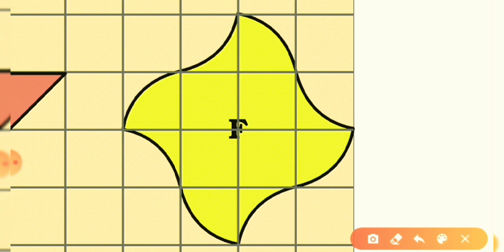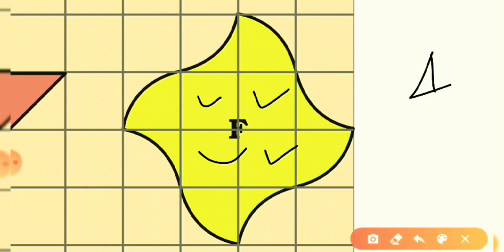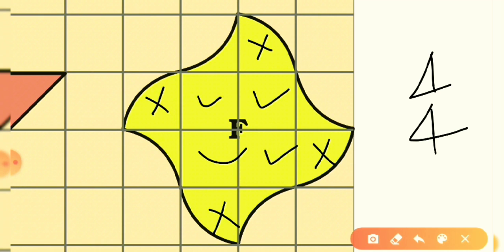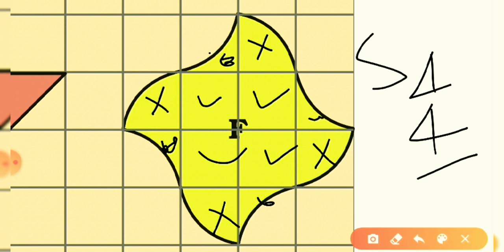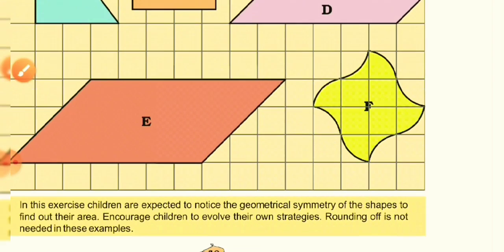For shape F, the grid boxes are clearly visible. Count whole squares: 1, 2, 3, 4 — four whole squares. Now count portions more than half: 1, 2, 3, 4 — four more-than-half squares, each counted as one whole. The remaining portions are less than half and are not counted. So 4 + 4 = 8 square centimeters is the area of shape F.